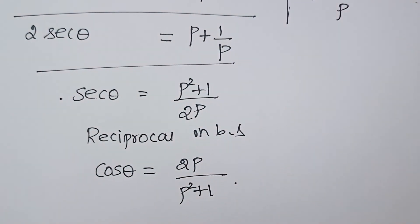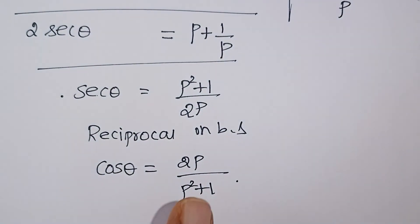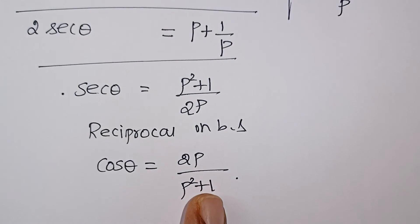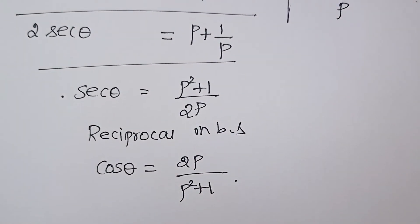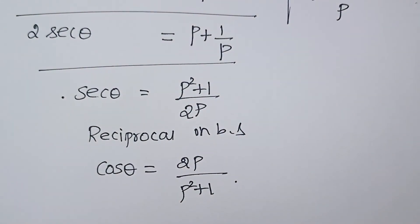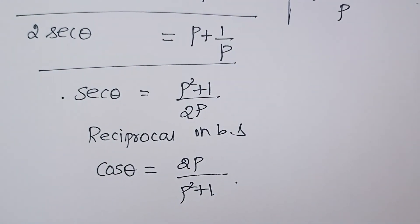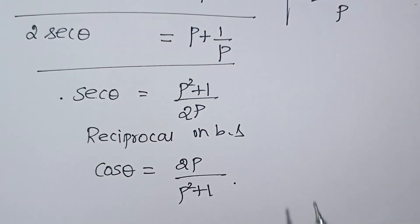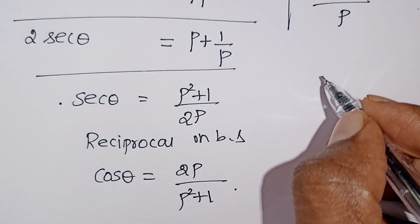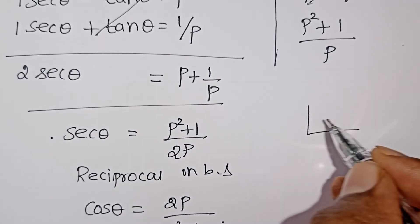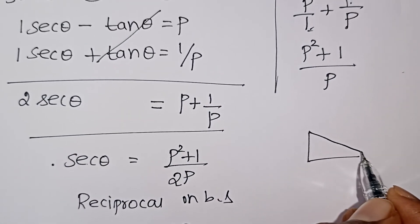If you are given sec θ and need sin θ, you can use the first identity sin²θ plus cos²θ equals 1, substitute the value of cos θ, and find sin θ from that.